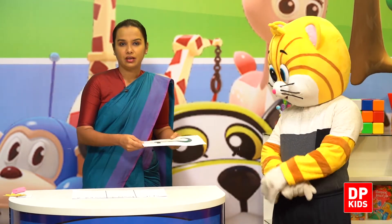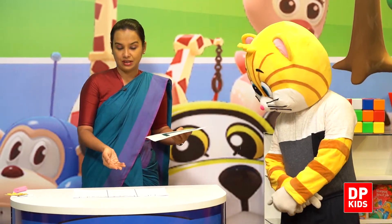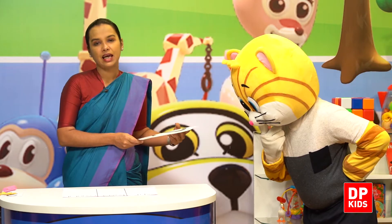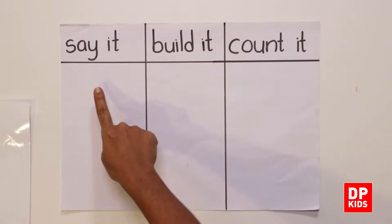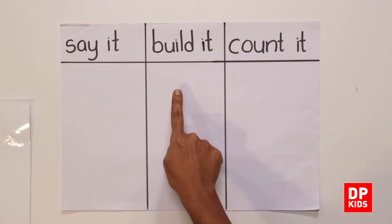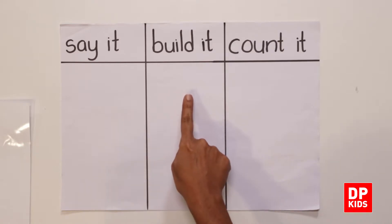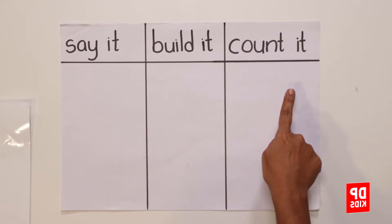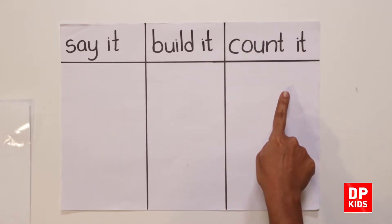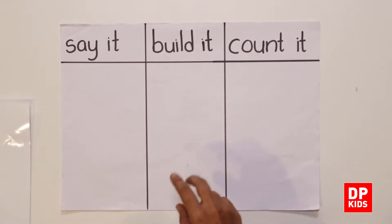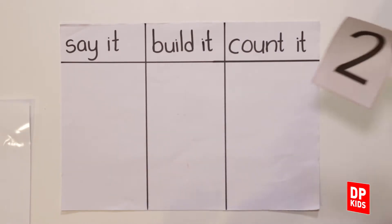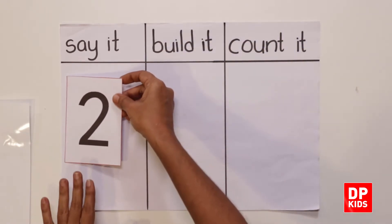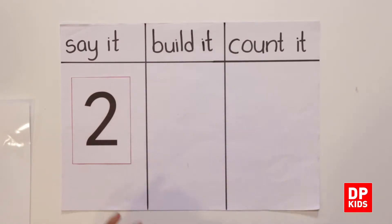Now we are going to do our next activity: say it, build it, and count it. Say it, build it, count it. Say it — number two. This is number two.